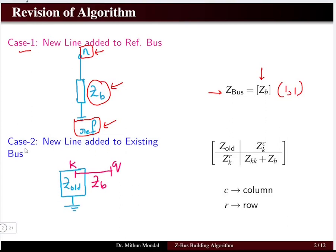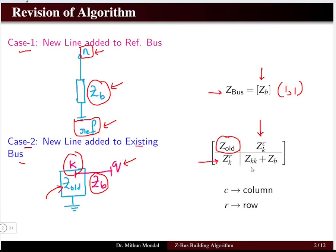Case 2: if a new line is added to an existing bus, where k is the existing bus and q is the new bus added to the old system having impedance matrix Z_old. The kth column and kth row of Z_old are retained, and the last row and last column equal Zkk plus the new impedance Zb.